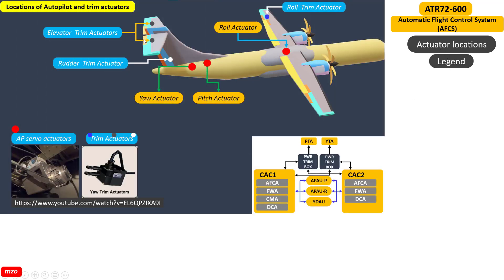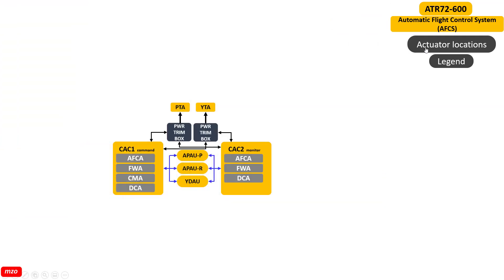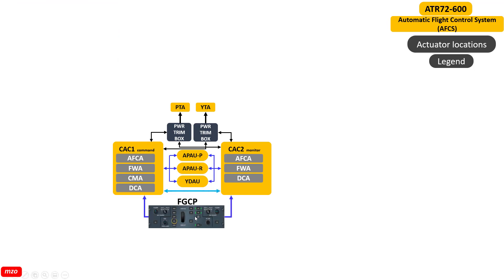Yaw trim actuator and yaw trim actuator and pitch trim actuator — you can see the locations. This is the flight guidance control panel, same for the CSC1 and CSC2.